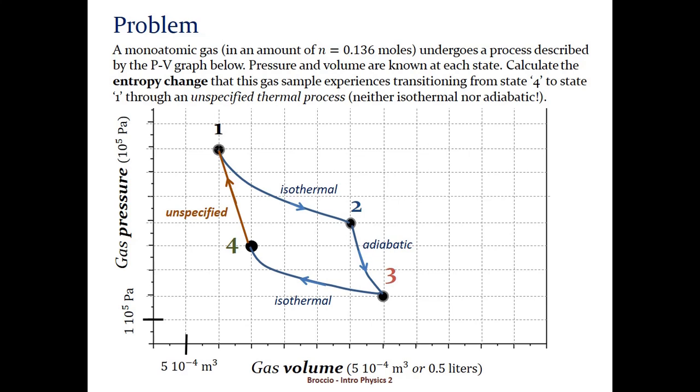First, the process from 1 to 2 is isothermal so the change in internal energy is zero. Using the first law of thermodynamics, the heat exchange is equal to the work done by the gas which is nRT1 logarithm of V2 over V1.